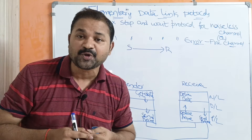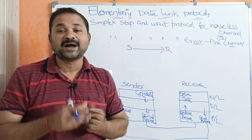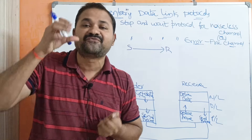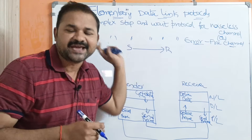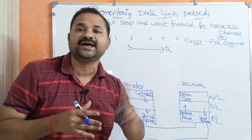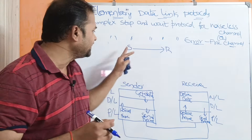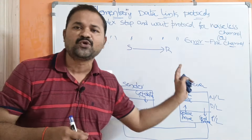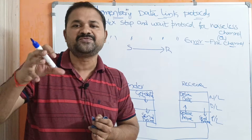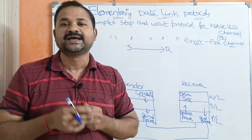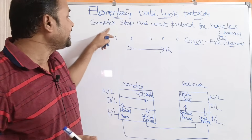Even though this is a simplex protocol — meaning data can be transmitted in only one direction — there is a flexibility: the receiver machine can provide acknowledgement to the sender. Simplex means data travels in only one direction, but the receiver has the capability to provide acknowledgements to the sender.